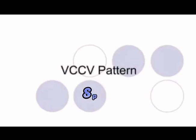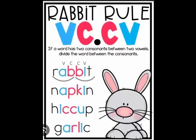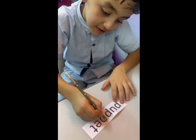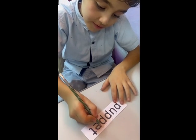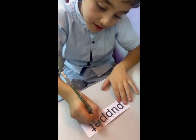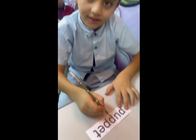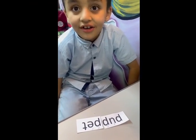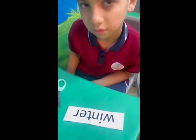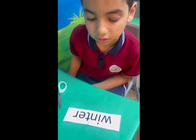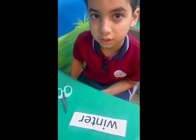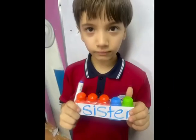Rabbit roll, rabbit roll! Hop up and down to the rabbit roll. With two consonants standing between two vowels, divide by the syllables in between the consonants. What is the meaning of the rabbit roll? Alright everyone, I'm sliding down to the syllables in the rabbit roll words.